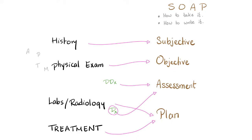Then you need to do the vital signs. What are the four vital signs? Temperature, arterial blood pressure, heart rate, and respiratory rate. Honestly, you should say pulse instead of heart rate, because pulse is more broad and it encompasses the heart rate, rhythm, volume, equality, etc.